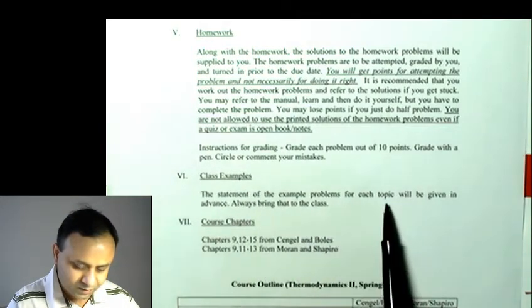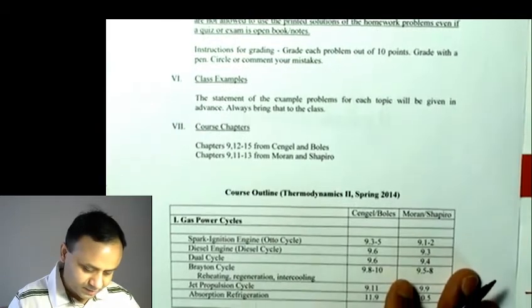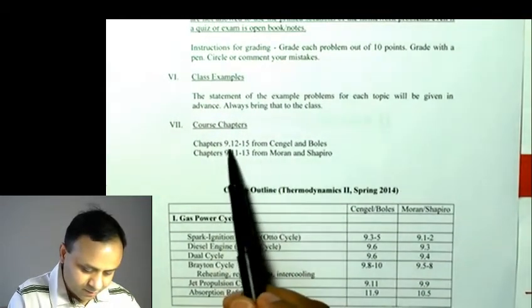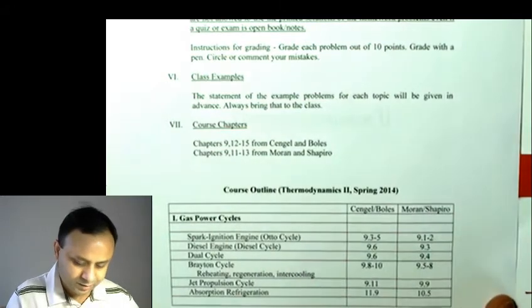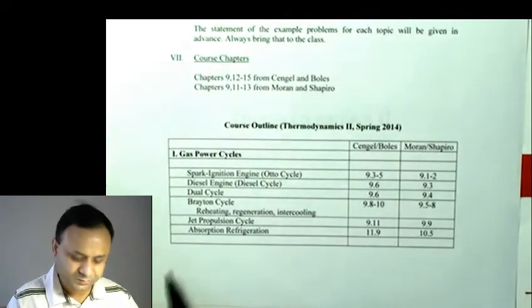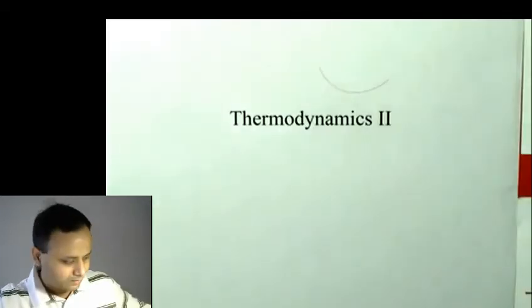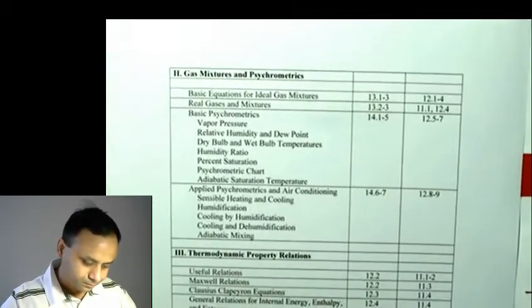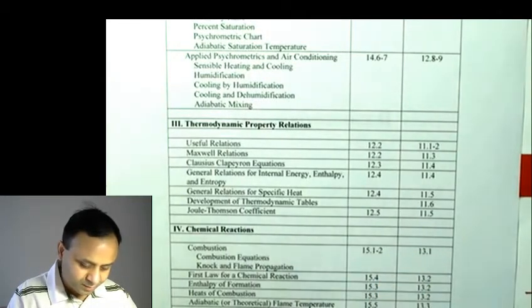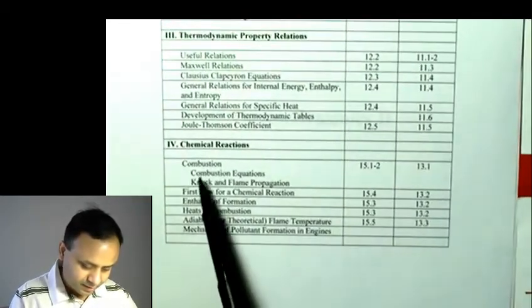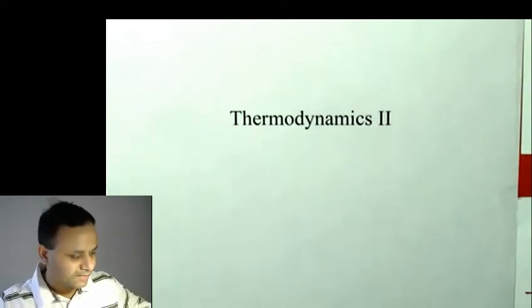Class examples — the problem statements will be on Springboard so you can bring a printout to class. The syllabus covers chapters 9 and 12–15 from Cengel & Boles, or chapters 9 and 11–13 from Moran & Shapiro, covering gas power cycles, gas mixtures, psychrometrics, air conditioning, thermodynamic property relations, and chemical reactions. We'll begin with the first topic: gas power cycles.